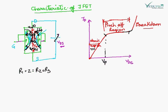In the characteristic of JFET, there are three main regions of operation. The first one is the ohmic region. The characteristic we have studied here is the drain characteristic of JFET, because we are seeing the effect of VDS, the drain voltage, on ID, the drain current.